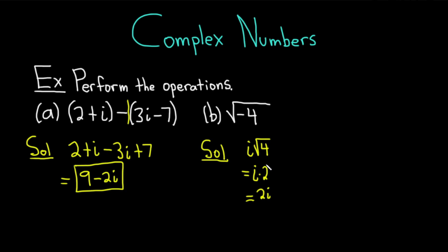That's a long way to do the problem — I wanted to show all the steps. But basically, when you see a negative inside the square root, you know it'll have an i. The square root of 4 is 2, so it's just 2i. Much easier.